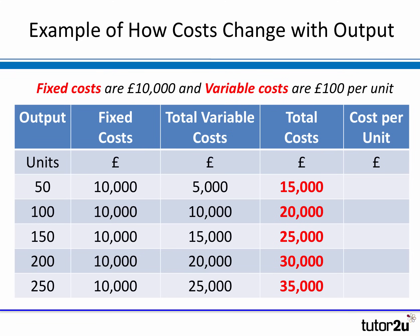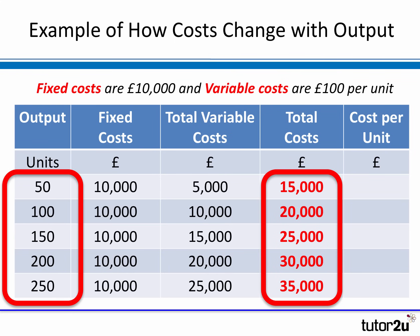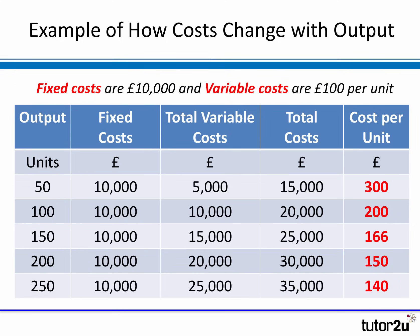At 50 units, total variable costs are five thousand pounds. To get total cost we add fixed costs and total variable costs together — so at 50 units, ten thousand plus five thousand gives fifteen thousand pounds total. To calculate cost per unit, we divide total costs by total units. For example, at 250 units we divide thirty-five thousand pounds by 250. You can see the cost per unit falls from 300 pounds at 50 units down to 140 pounds at 250 units, because fixed costs are being spread over a larger number of units.